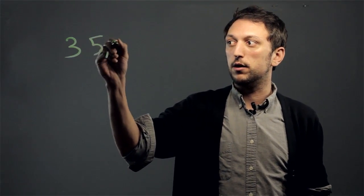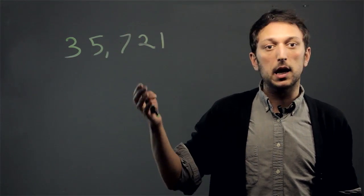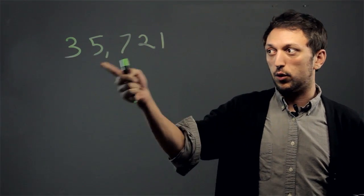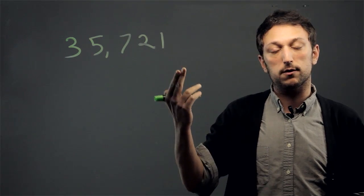Now, standard form is what you're used to with whole numbers. For example, if you have the number 35,721, that's standard form. And that's a whole number because there's no fraction or decimal.